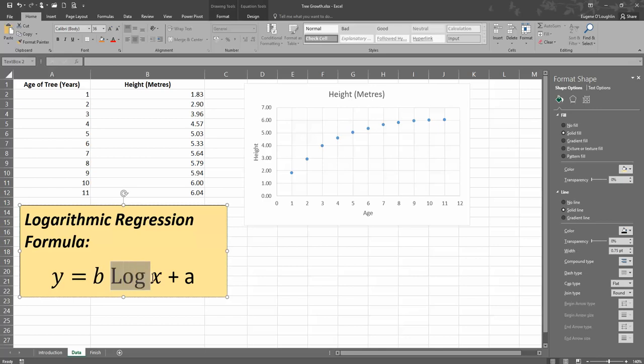Then we've got to take the log of x. So this is where the logarithmic part of the regression comes in. So our x, well that's in this case here, it's going to be our age. So that is our independent variable and we take the natural log of that.